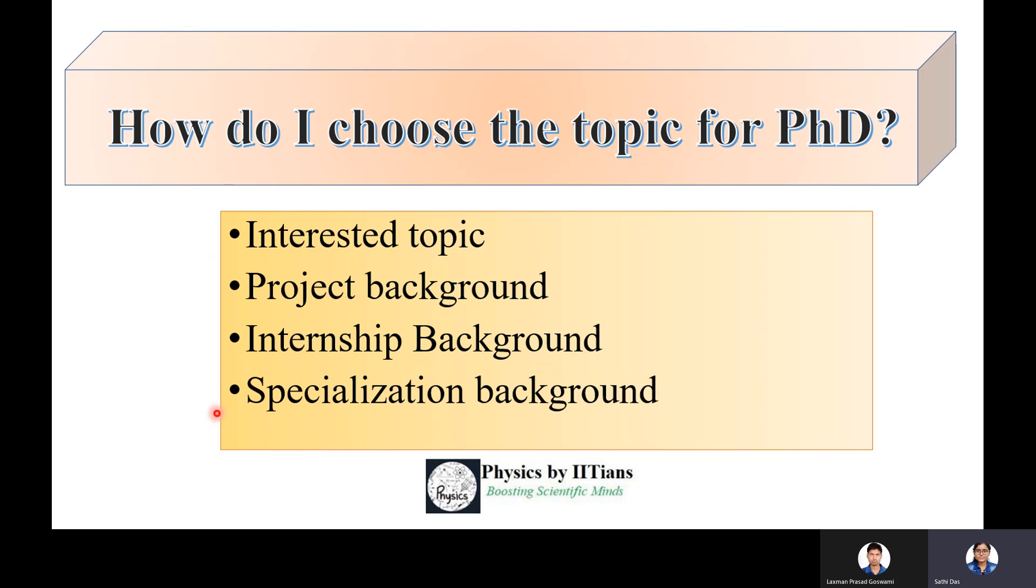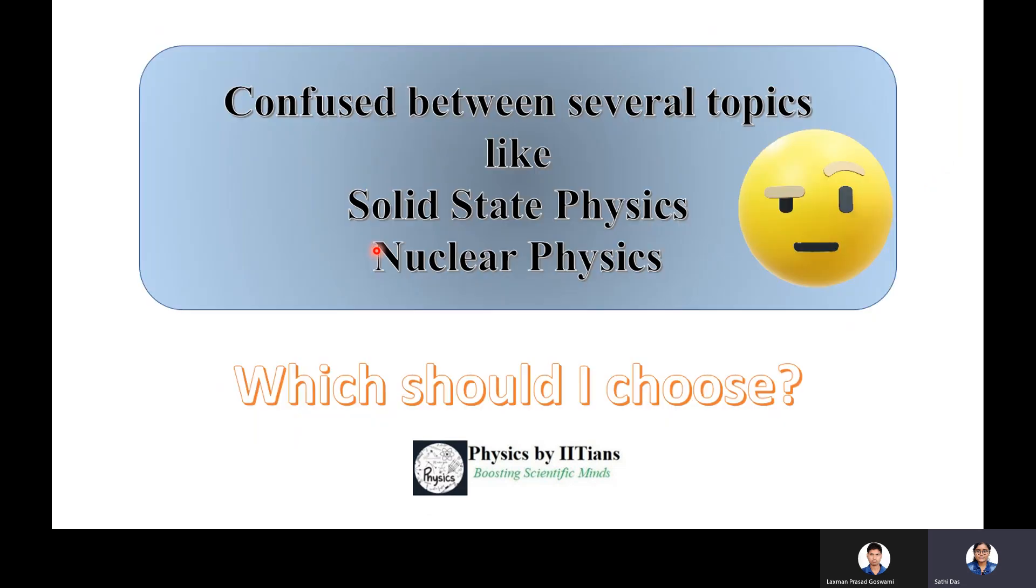You can also choose from your specialization background. During masters or bachelors, if you've done any project, internship, or have a specialization subject, you can choose that for PhD. If you haven't done any of these, you just go with an interested topic which you like.